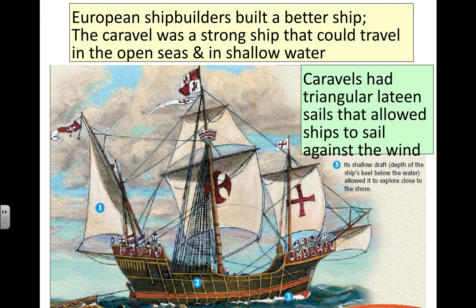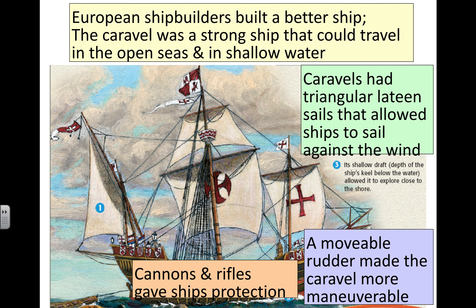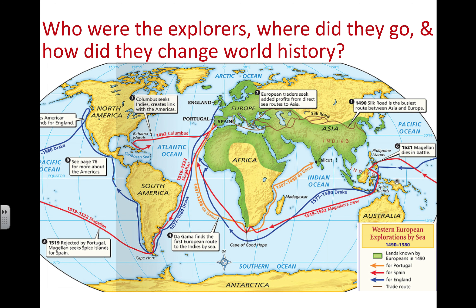Caravels had triangular lateen sails that allowed the ships to sail against the wind, which is extremely important for navigating beyond just going with the wind's direction — this is what allows sailors to sail back in return. The movable rudder provided direction, acting like a pointed tool on the bottom of the ship to steer it. Cannons and rifles could also be added to the caravel for protection, as there was a rise of piracy at sea.